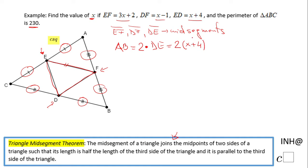Similarly, we can write AC. AC will be twice the measure of the midsegment DF, so it'll be 2 times (x - 1).